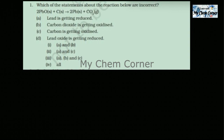Moving on to the very first exercise question: 'Which of the following statements about the reaction below is incorrect?' The equation is: lead oxide plus carbon giving lead plus carbon dioxide. Option A: lead is getting reduced. Option B: carbon dioxide is getting oxidized. Option C: carbon is getting oxidized. Option D: lead oxide is getting reduced.